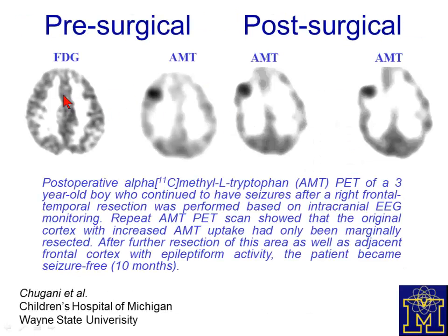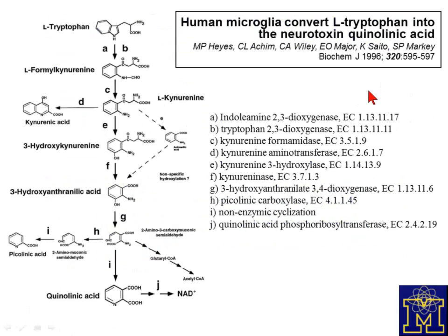These investigators showed that it is the tuber that accumulates AMT that needs to be surgically resected to stop the epilepsy. In one case, residual AMT uptake remained in the surgical bed postoperatively and seizures were not relieved; when they reoperated to remove the remaining area of AMT accumulation, seizures stopped. The assumption is that in tuberous sclerosis, and perhaps other neurologic conditions, it is inflammation that drives epileptic seizures.